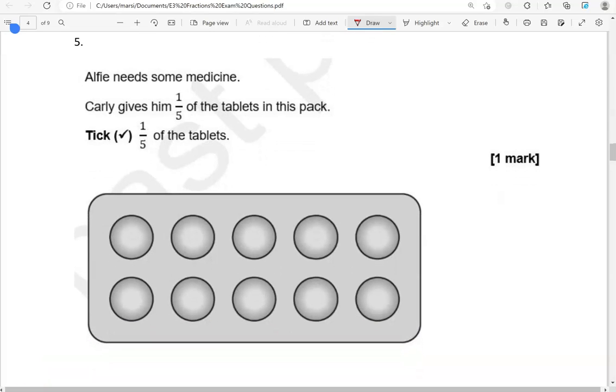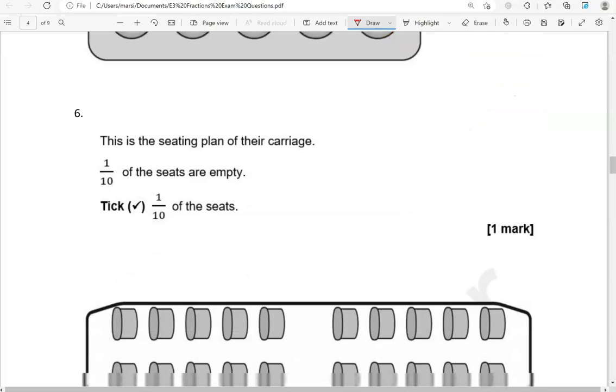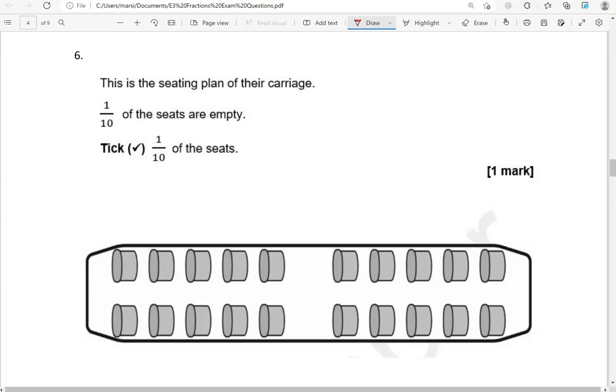Alfie needs some medicine. Carly gives him one-fifth of the tablets in this pack. Tick one-fifth of the tablets. One-fifth is one out of five. So we've got ten tablets altogether. That will be two out of ten. When you have ten tablets, that's going to be two of them. So we've doubled the five, so we're going to double the one as well. You could also see them as having two rows of five each. Any of the two tablets anywhere.